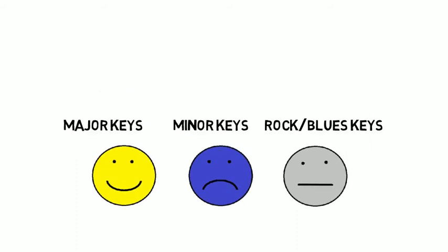The major key fishing area is where you can find all the notes and chords for songs that sound happy, light, or upbeat. The minor key fishing area is where you can find all the notes and chords that will make a song sound unhappy, dark, or sad. And in the rock or blues key fishing area is where you can find the notes and chords for songs that sound somewhere in between.